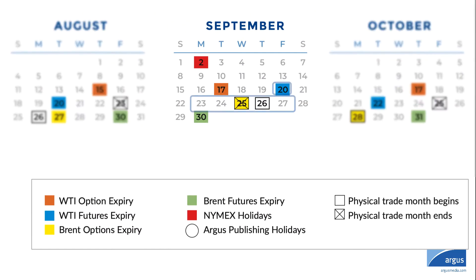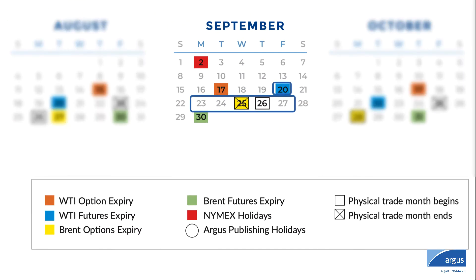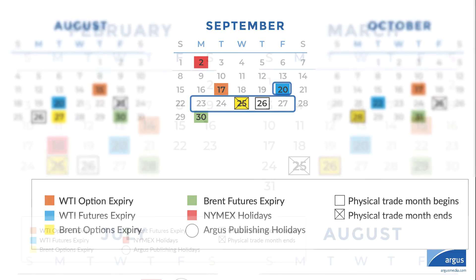For the three working days after the NYMEX expires, the Argus WTI formula basis represents the cash roll trades in the physical WTI market at Cushing.